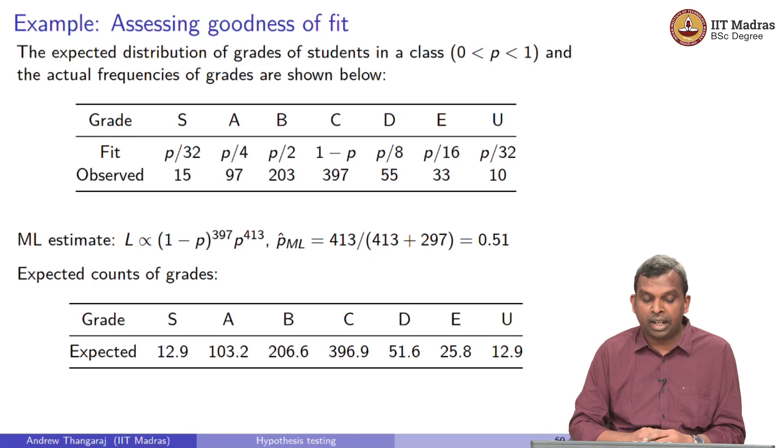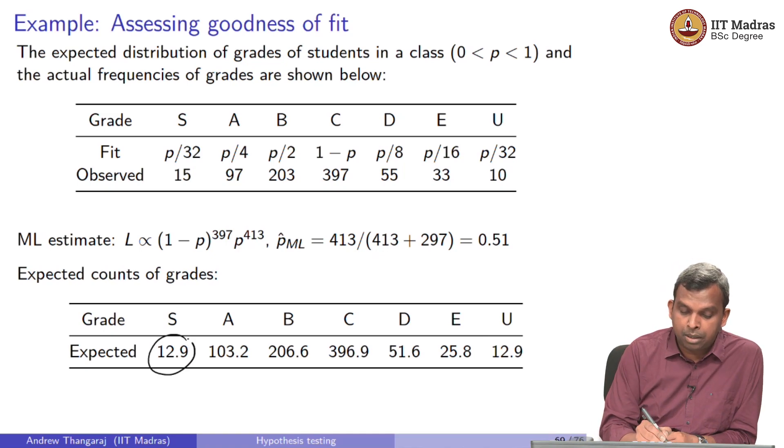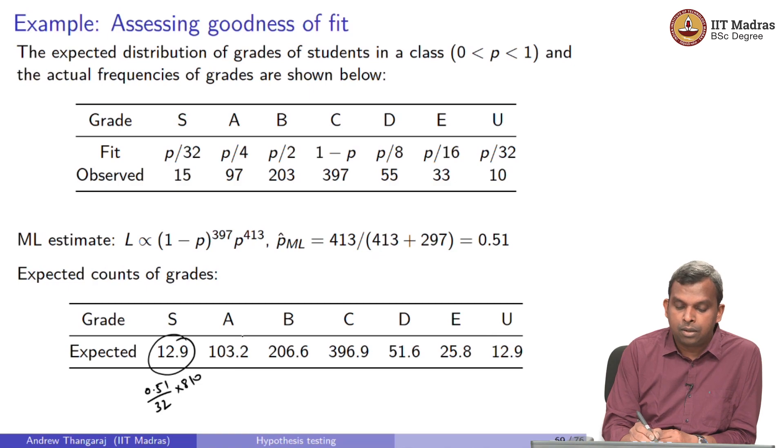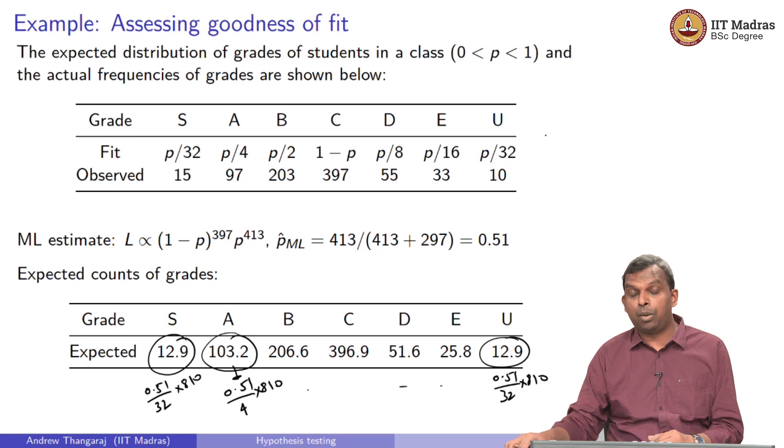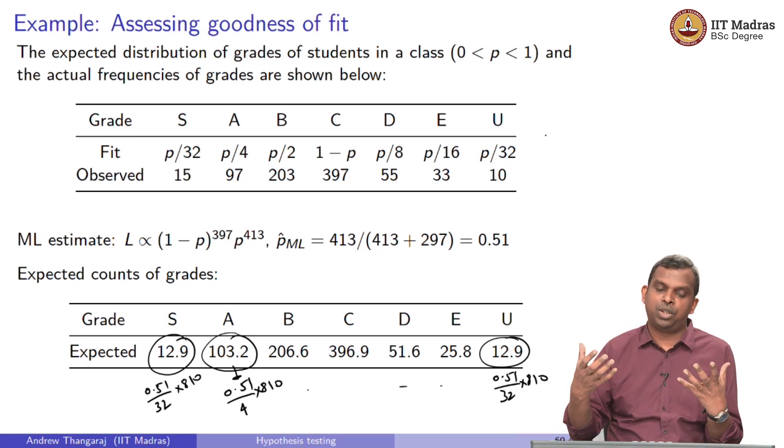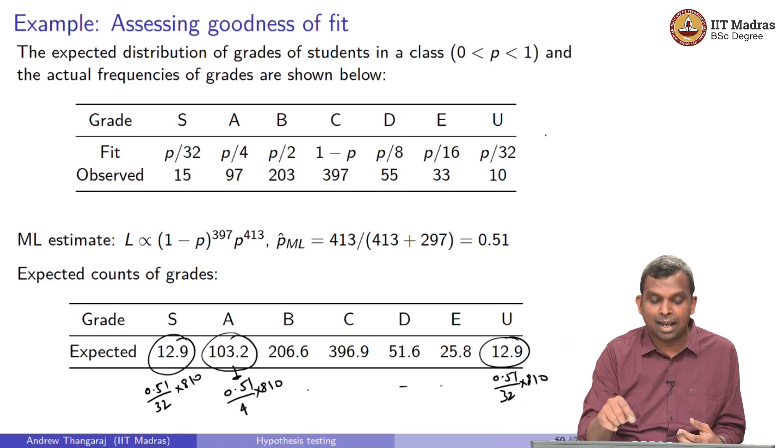Now the question is how good a fit is this to the observed data? What is the expected count of grades? If P hat ML were 0.51, the number of S's, what is this number? This number should be 0.51 by 32 times 810. The expected number of S's should be this. This number will be 0.51 by 4 times 810 and so on. This last number will also be 0.51 by 32 times 810.